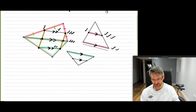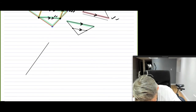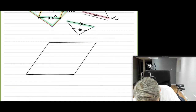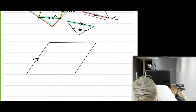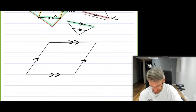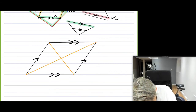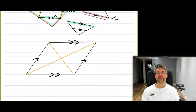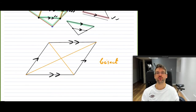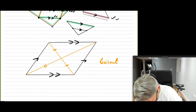Another very interesting property: if you create a parallelogram — where these two sides are parallel and these two sides are parallel — and then draw the diagonals, it turns out that these diagonals bisect each other. Bisect means they cut each other into equal halves. So this segment equals this segment, and this segment equals that segment.